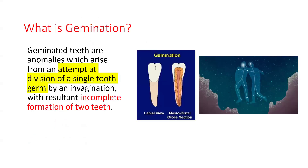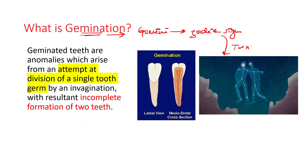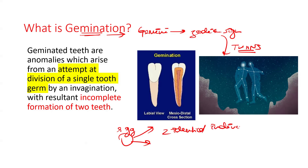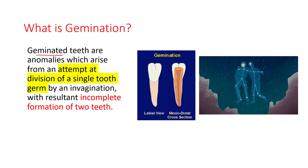Getting right into the topic — what is gemination? When you think of gemination, remember the zodiac sign Gemini. Gemini represents twins, and twins come from one fertilized egg. Geminated teeth are anomalies which arise from an attempt at division of a single tooth germ by invagination, resulting in incomplete formation of two teeth. So here you have one tooth germ which tries to divide into two teeth.